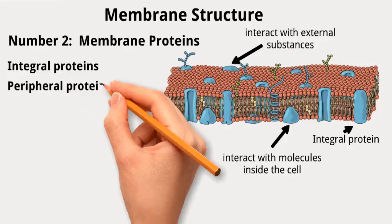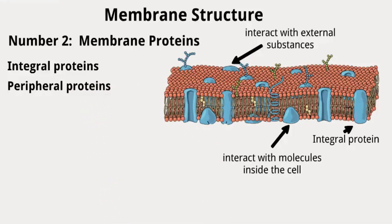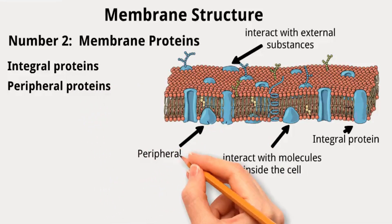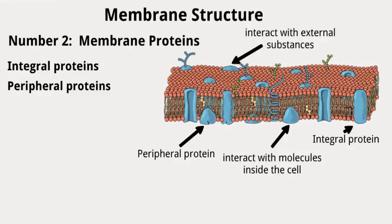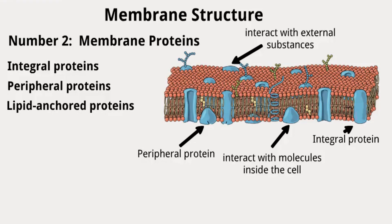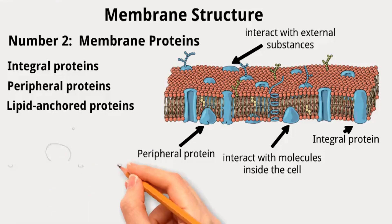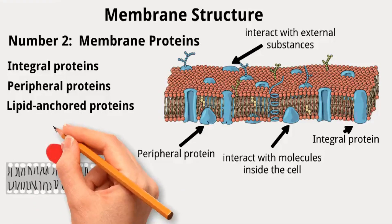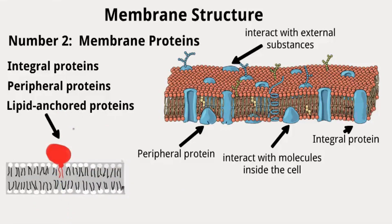(2) Peripheral proteins, which are entirely located outside the lipid bilayer on either the extracellular or cytoplasmic side, associated with the membrane surface through non-covalent interactions. (3) Lipid-anchored proteins, which are found outside the lipid bilayer on either side of the membrane but are covalently connected to a lipid molecule situated within the bilayer. This classification helps understand the diverse functions and roles of membrane proteins in various cellular processes.